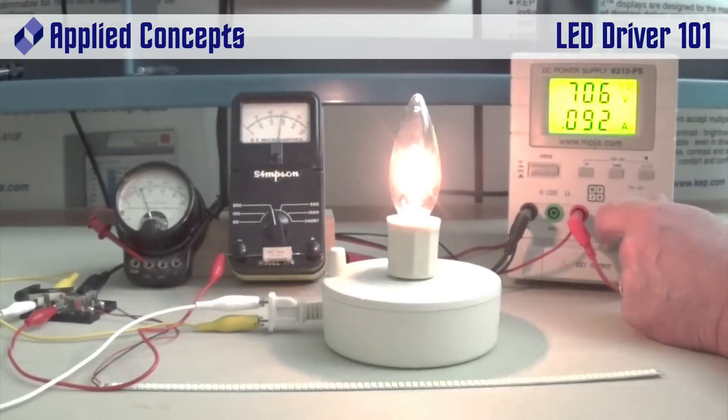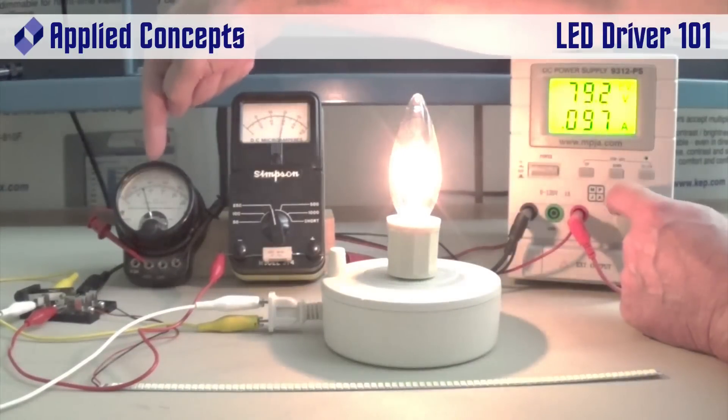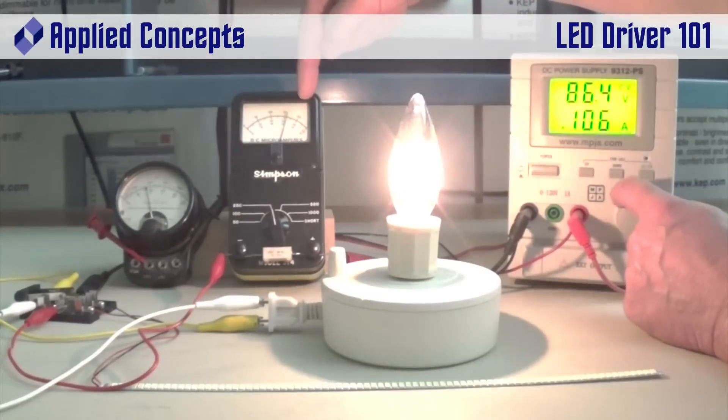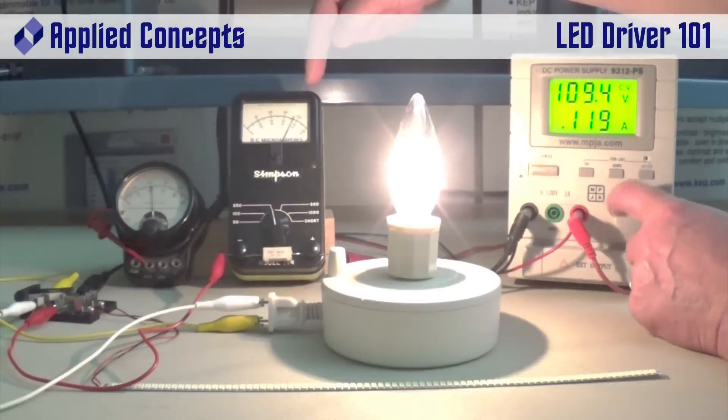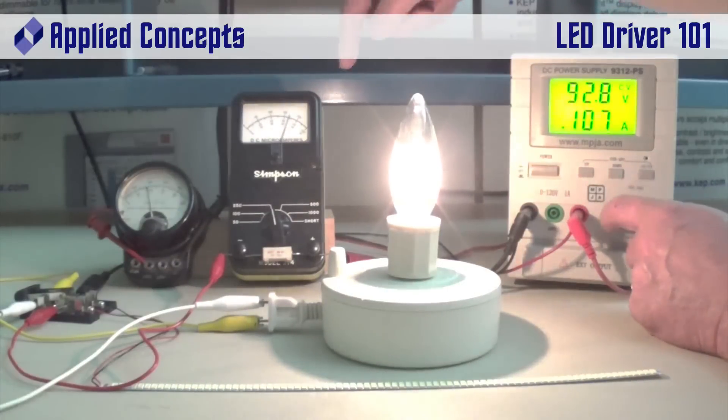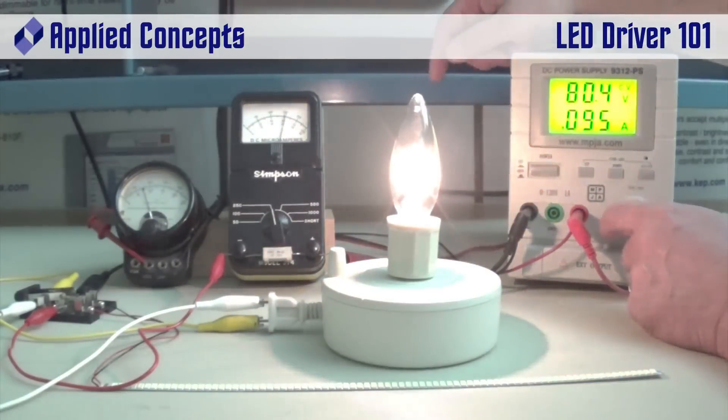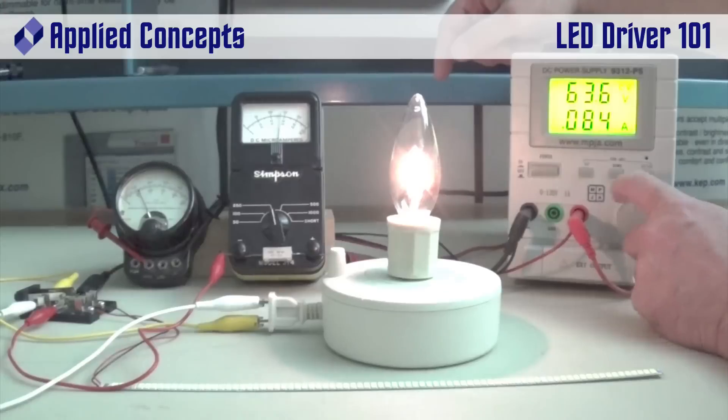This incandescent bulb basically is our fixed resistive load. And as we increase voltage, you'll see that increase here on this meter, you'll see a corresponding increase in current. And again, you'll see these two move at a fairly equal rate because we have a fixed impedance, and so obeying Ohm's law, we have something that changes pretty much in a very linear fashion.